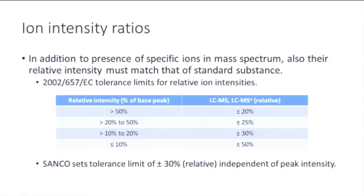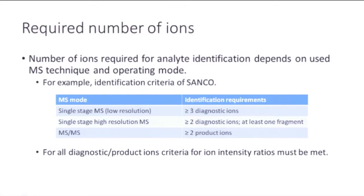The requirements for intensity ratios must be met, but for how many ions? The number of required ions for identification depends on the mass spectrometric technique used. SANCO has defined the number of required diagnostic ions in a table. For single-stage low-resolution mass spectrometry, at least three diagnostic ions are required. For single-stage high-resolution mass spectrometry, two diagnostic ions is sufficient. For the most common experiment type, the MS/MS experiment, at least two product ions are required. And clearly, for all those diagnostic ions, the criteria set for the intensity ratios must be met.